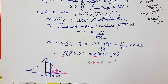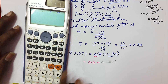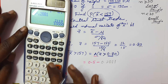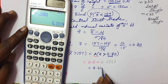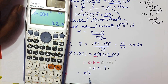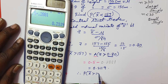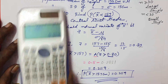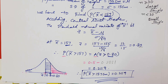So we calculate 0.5 minus 0.2881 and get 0.2119. This is the required probability — the probability that the sample mean height of 36 students is more than 157 centimeters is 0.2119. In this way we can easily find the probability of a sample mean according to given population data. In the next video I will give more examples on sample mean. Thank you.